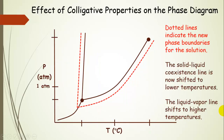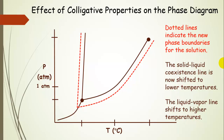What happens when we add a non-volatile solute to the solvent? Colligative properties arise from thermodynamics. If we add a non-volatile solute, then the phase boundaries — the liquid-vapor coexistence line and solid-liquid coexistence line — move relative to the pure solvent. Notice the triple point also moved. The dotted lines on this phase diagram indicate the new phase boundaries for the solution, while the original solid lines still represent the pure solvent. Notice that the liquid-solid coexistence line has now shifted to lower temperatures.